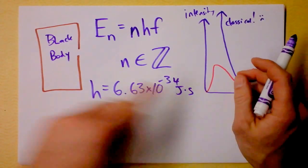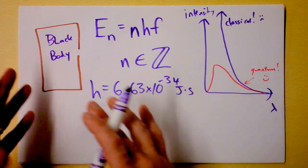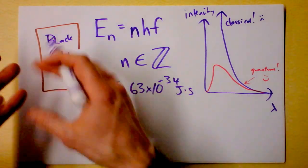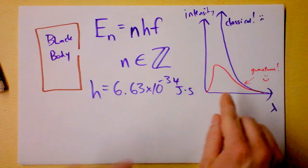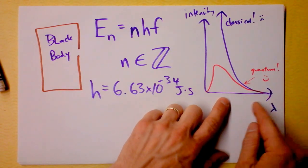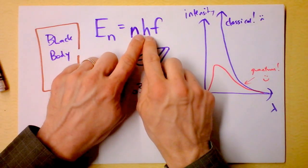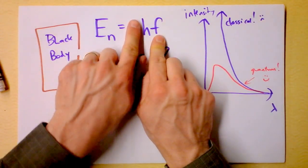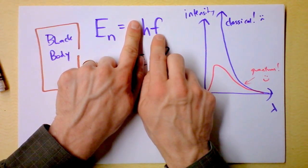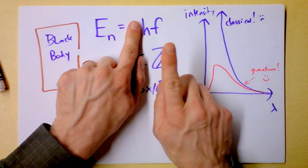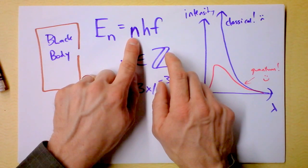He solves this by saying inside the black body we cannot have arbitrary amounts of energy because there are shakings here. As the frequency increases, wavelength gets smaller. HF — the quantum for HF — that amount of energy is going to get bigger and bigger as the frequency gets bigger and the wavelength gets smaller. So at some point we're not even going to have enough energy to get to n equals 1.